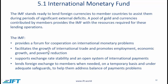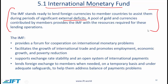I have tried to reproduce the most important aspects on these slides. The IMF stands ready to lend foreign currencies to member countries to assist them during periods of significant external deficits. A pool of gold and currencies contributed by members provides the IMF with the resources required for these lending operations. That is the high-level function of the IMF, and this also describes how the IMF gets its funding.